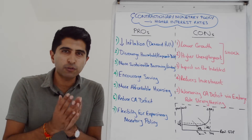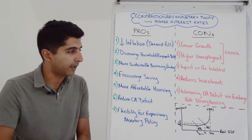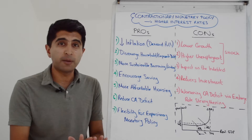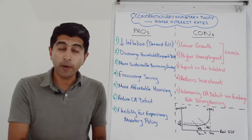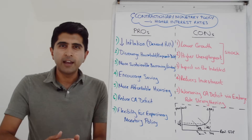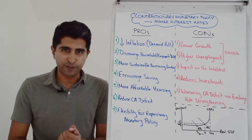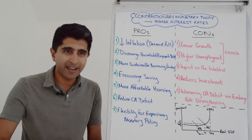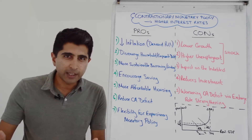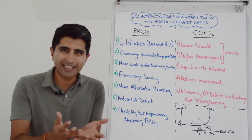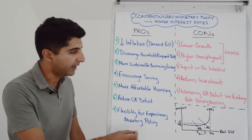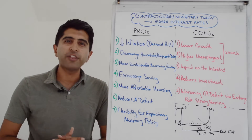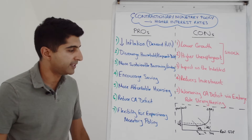At the same time, higher interest rates might mean more affordable housing. By increasing the cost of mortgages, you can cool down demand for housing, which might mean lower house prices or at least reducing the rate of growth of house prices. This makes it more affordable for first-time buyers and low-income families to enter the housing market and get on the housing ladder — good for their living standards, but also a good way to reduce wealth inequality and improve social mobility.